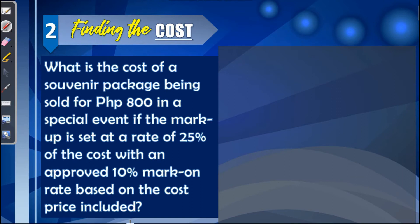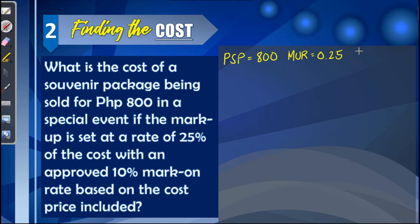Second example: finding the cost. What is the cost of a souvenir package being sold for 800 pesos in a special event if the markup is set at a rate of 25% of the cost with an approved 10% mark on rate based on the cost price included? The given values are: peak selling price = 800 pesos, markup rate = 25% or 0.25, and mark on rate = 10% or 0.10.